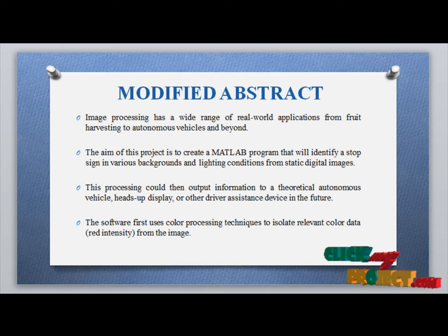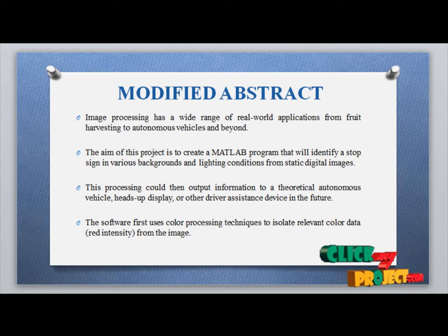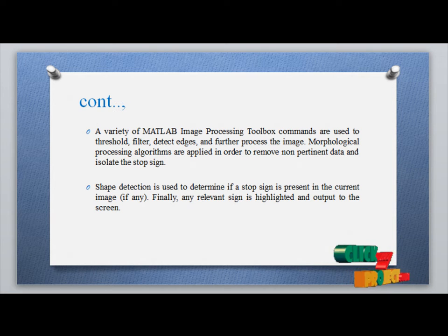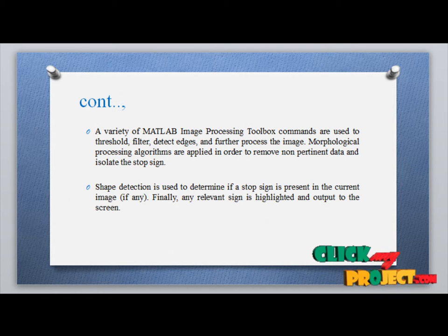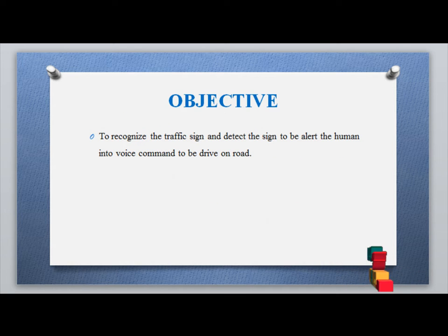The software first uses color processing techniques to isolate the relevant color data from the images. A variety of MATLAB image processing toolbox commands are used for threshold filtering, edge detection, and morphological segmentation to remove non-pertinent data and isolate the stop sign. Shape detection is then used to determine the stop sign, and the relevant result is highlighted as the output on screen.